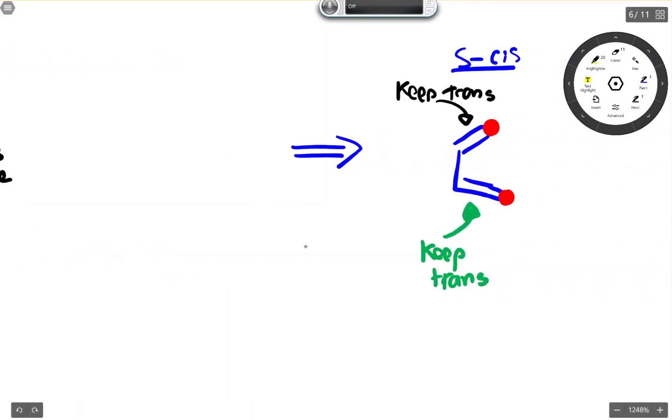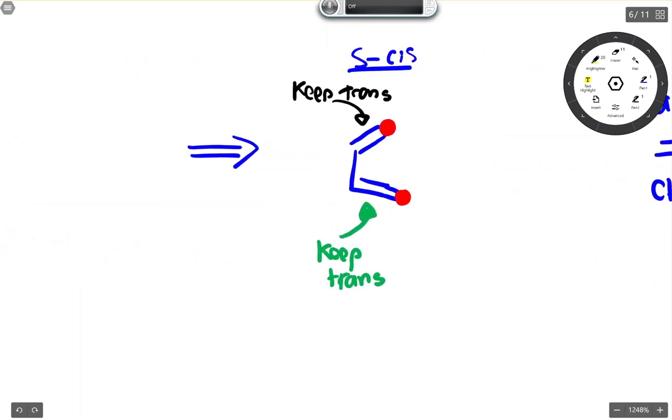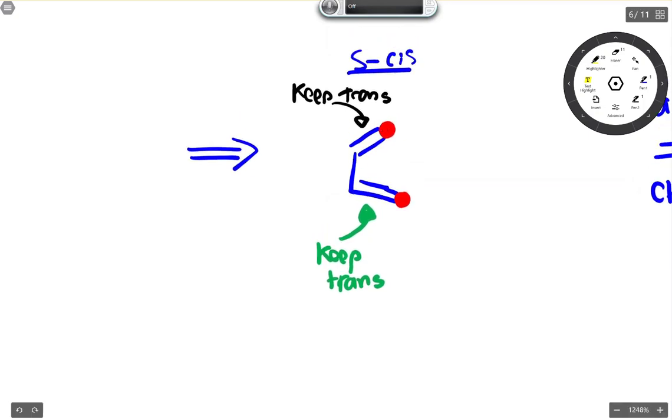First thing to do is to come around and draw our diene in the S-cis conformation. Then when we put our methyl group, we have a choice. We could put our methyl group pointing this direction or pointing that direction. All we need to do is remember that it was trans in the original structure.